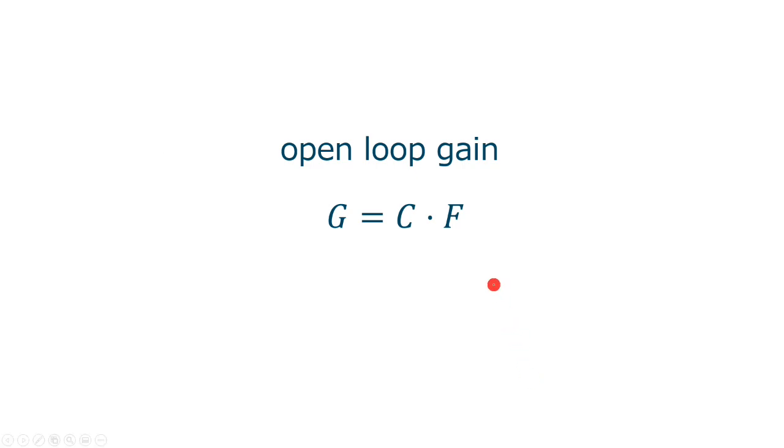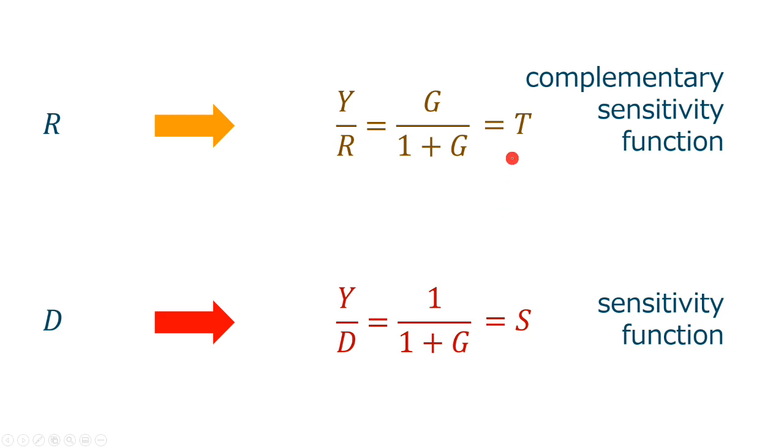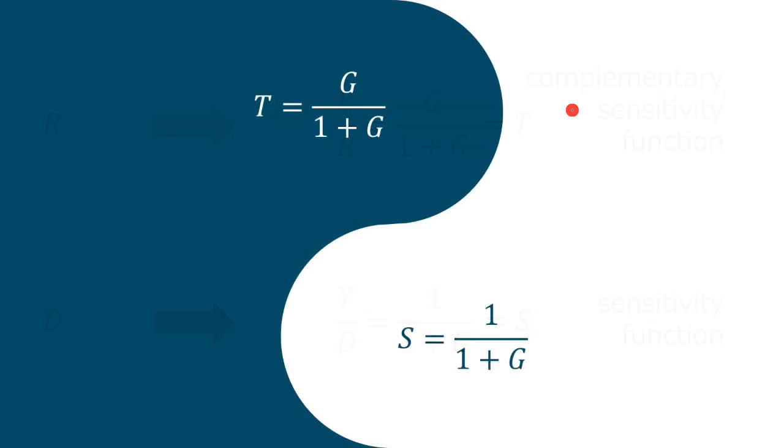Let us shorten Cf to G as the open loop gain. And some nomenclature. To the transfer function S from the disturbance we call the sensitivity transfer function because it measures the sensitivity to disturbances. And to the transfer function T from the reference to the output we call the complementary sensitivity. This is complementary because the sum of S and T is always 1. If one gets larger, the other has to go smaller.